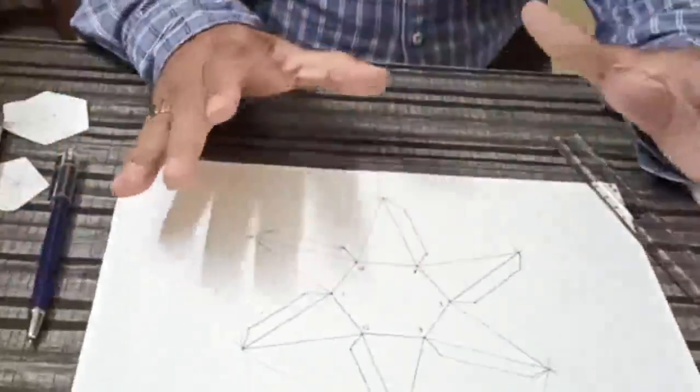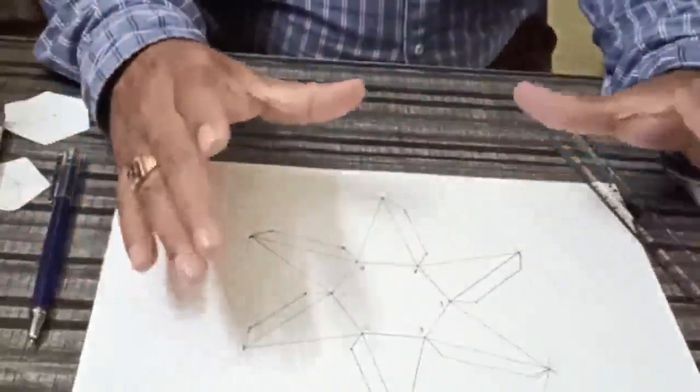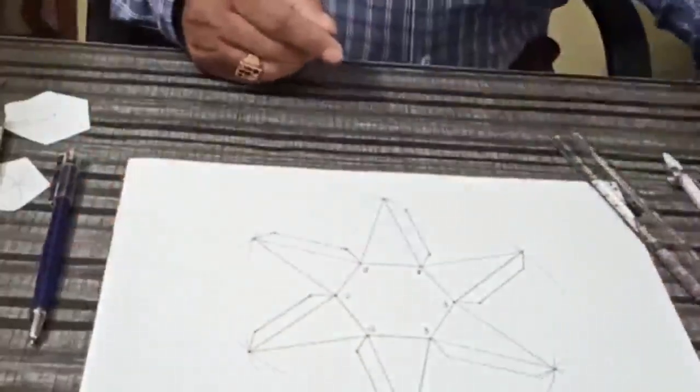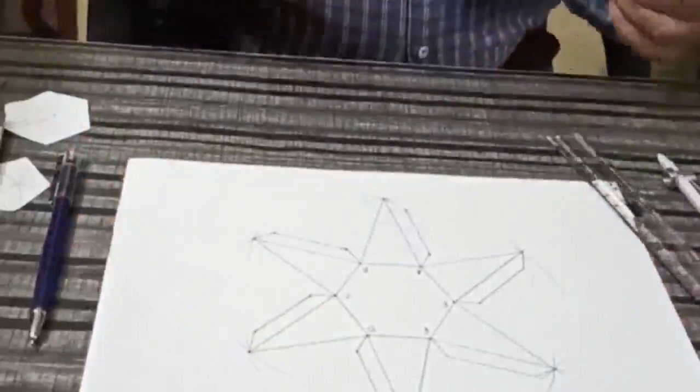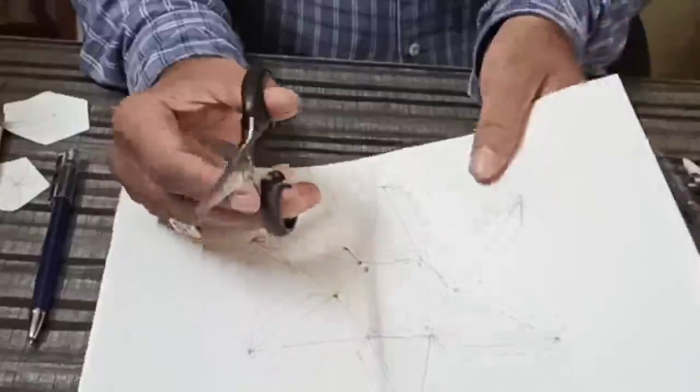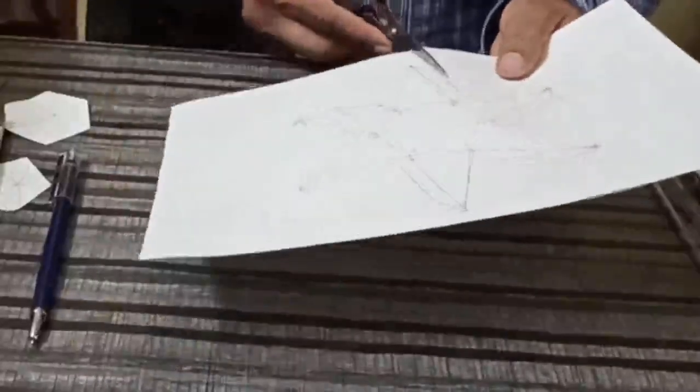Now the drawing and paper cutting procedure to make a hexagonal pyramid is over. Now we will remove the extra portion from the border. We'll cut the outlines from the figure.